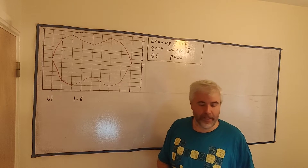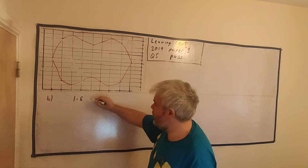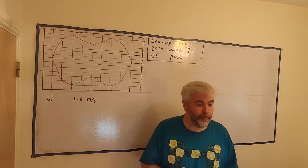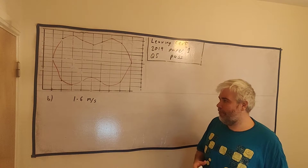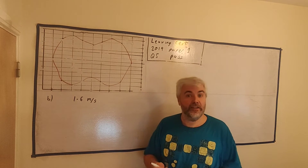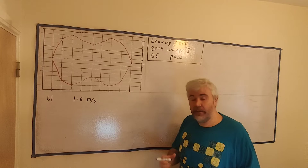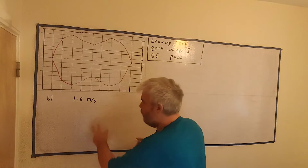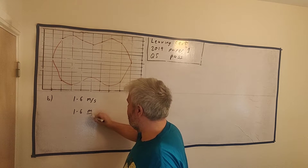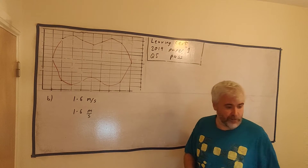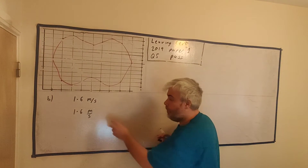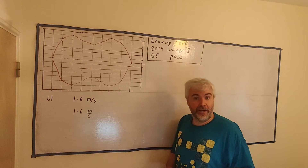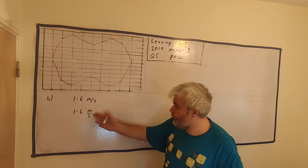Part B says Nula can walk at a speed of 1.6 meters per second. Write her speed in kilometers per hour. Some students can just do this in their head, others can't. Here's a way I've found quite successful: keep the units and use them for information. So 1.6 meters per second — that line means divide by. Per second is actually divide by second: meters divided by seconds, which is distance divided by time.